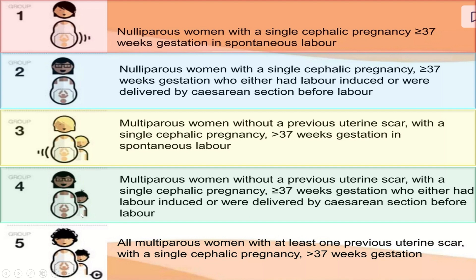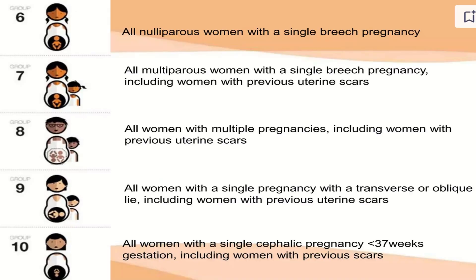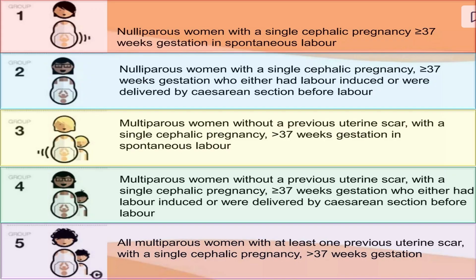Group five includes multiparous women — you can see a previous baby in the picture — but also has the letter 'C' indicating a cesarean scar before this pregnancy. It includes all multiparous women with at least one previous uterine scar with a single cephalic pregnancy of more than 37 weeks. In all five groups, we have single cephalic pregnancy of more than 37 weeks with a longitudinal lie.